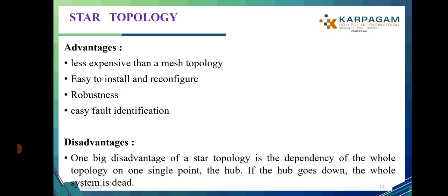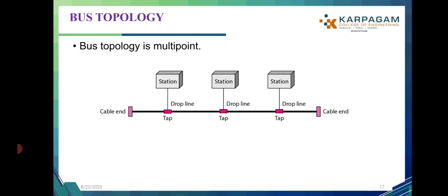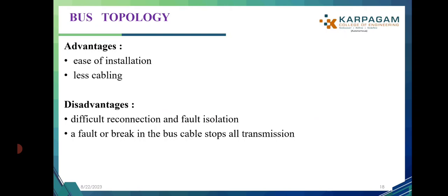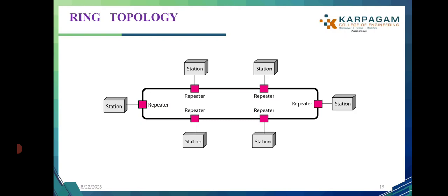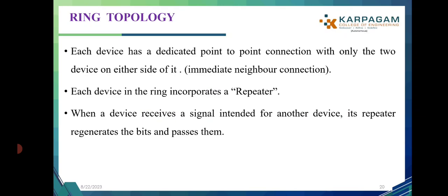Ring topology has a ring-like structure where the cable is connected in a ring with repeaters. Data is sent from one device to another in one direction using point-to-point connections. Each device in the ring incorporates a repeater — when a device receives a signal intended for another device, the repeater regenerates the bits and passes them to the next device. Advantages include easy installation, reconfiguration, and fault isolation. The major drawback is unidirectional traffic.